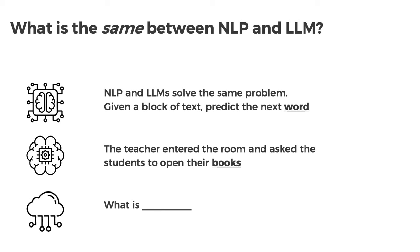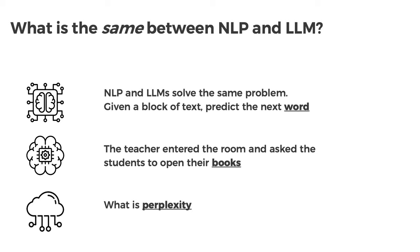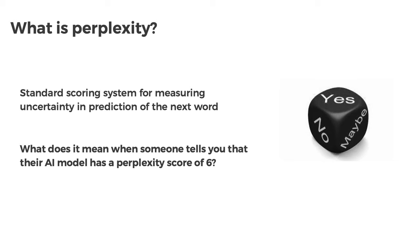Not all predictions are created equal — some have very little context and that's when the problem gets tricky. This brings us to perplexity — a standard scoring system used for these types of models to measure the uncertainty in next-word prediction. If you're working with engineering teams, they might say 'my AI model has a perplexity score of six.' A perplexity of six is essentially equivalent to having a six-sided die with six words on it, rolling it, and getting the right answer. Lower perplexity is better — you want fewer sides on the die.